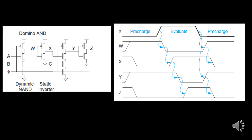Phi is the clock signal showing pre-charge, evaluation, and pre-charge phases. During pre-charge, Phi equals 0: W goes high, so X goes low, and Y turns on going high. During evaluation mode, Phi equals 1: W goes low, causing X to go high. If the input changes, output Y goes low, and Z immediately changes to high. In this way, the monotonicity problem is overcome.